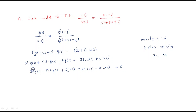For the second row of A, we look at the coefficients. Starting from s-power-0, the constant term is −6, and the s-power-1 coefficient is −5. So the second row is [−6, −5]. The complete A matrix is [[0, 1], [−6, −5]].